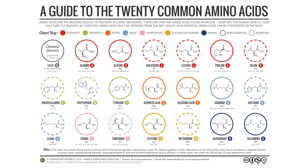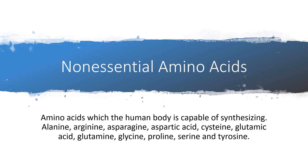These are the 20 standard alpha amino acids. These 20 amino acids can be divided into two groups: essential and non-essential amino acids. Non-essential amino acids are amino acids which the human body is capable of synthesizing. These are alanine, arginine, asparagine, aspartic acid, cysteine, glutamic acid, glutamine, glycine, proline, serine, and tyrosine.